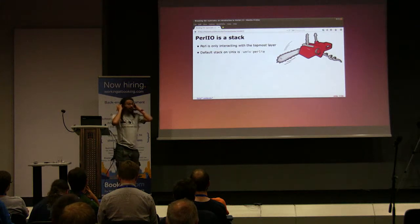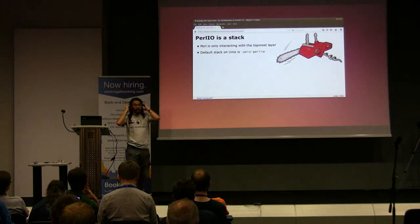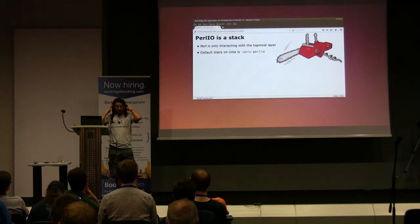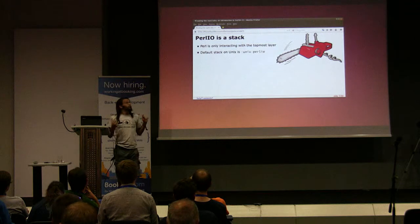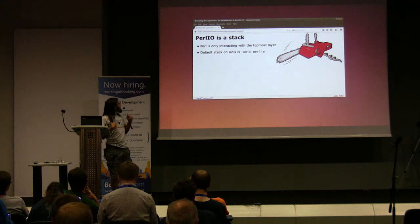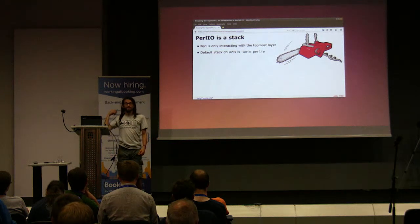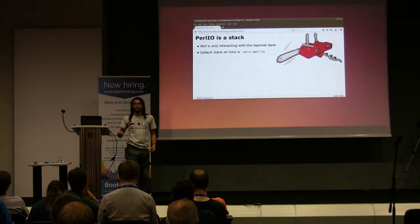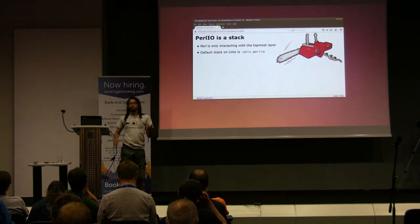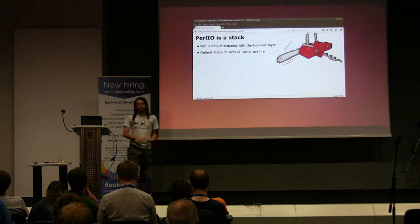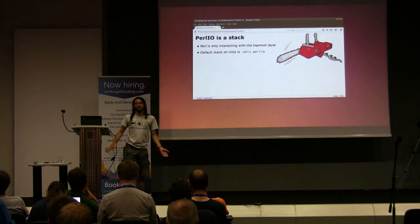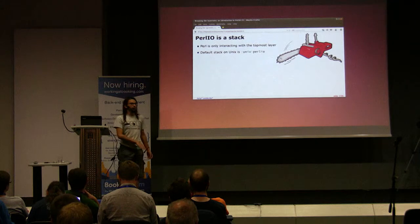To understand PerlIO, you have to understand it is a stack. Ordinarily you're only interacting with the topmost layer, and the topmost layer is interacting with the layer below it, and that one is interacting with the layer below it, until you hit the base layer, which should be the lowest-most layer.